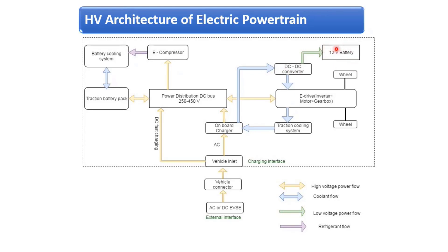The traction cooling system and vehicle control also take place through this architecture. The basic architecture of the electric vehicle powertrain has three major items: battery pack, power distribution unit, and e-drive. The battery pack is charged either by AC power using the onboard charger or by DC power directly.